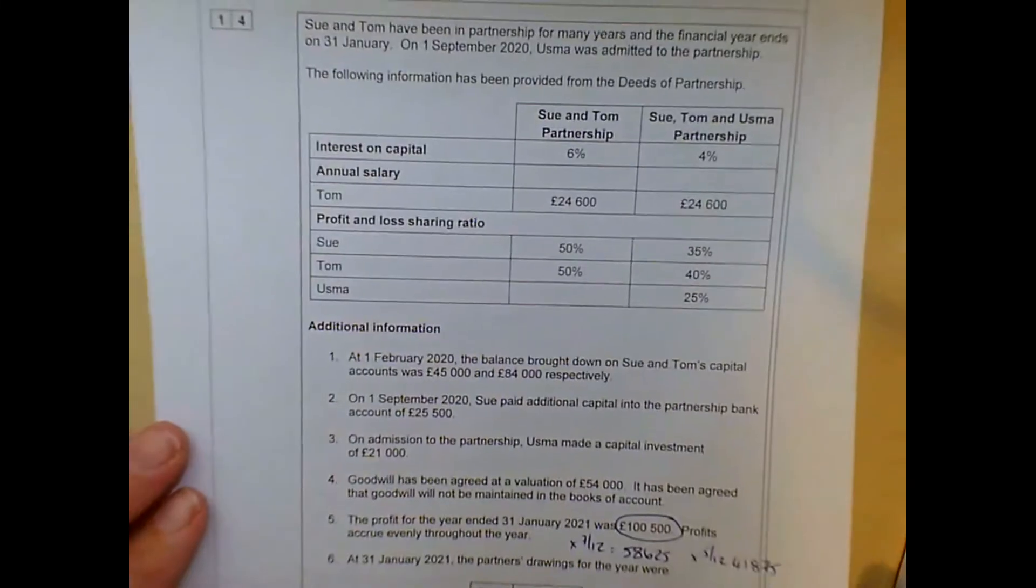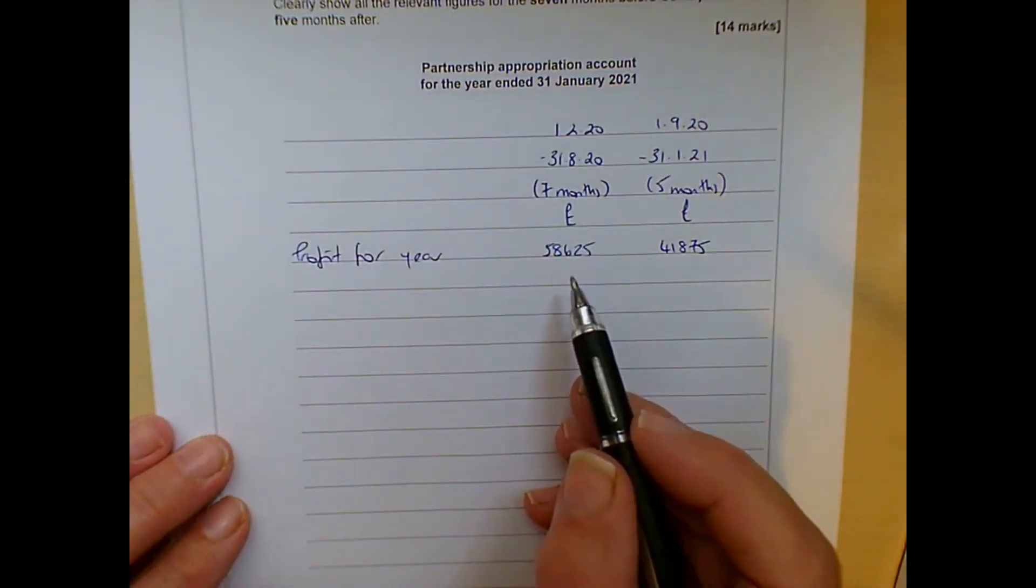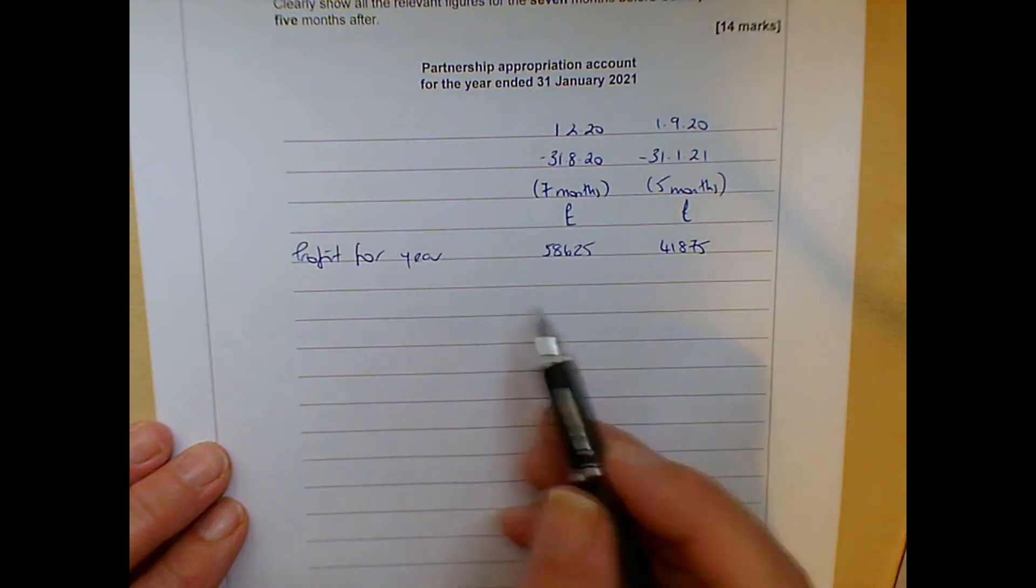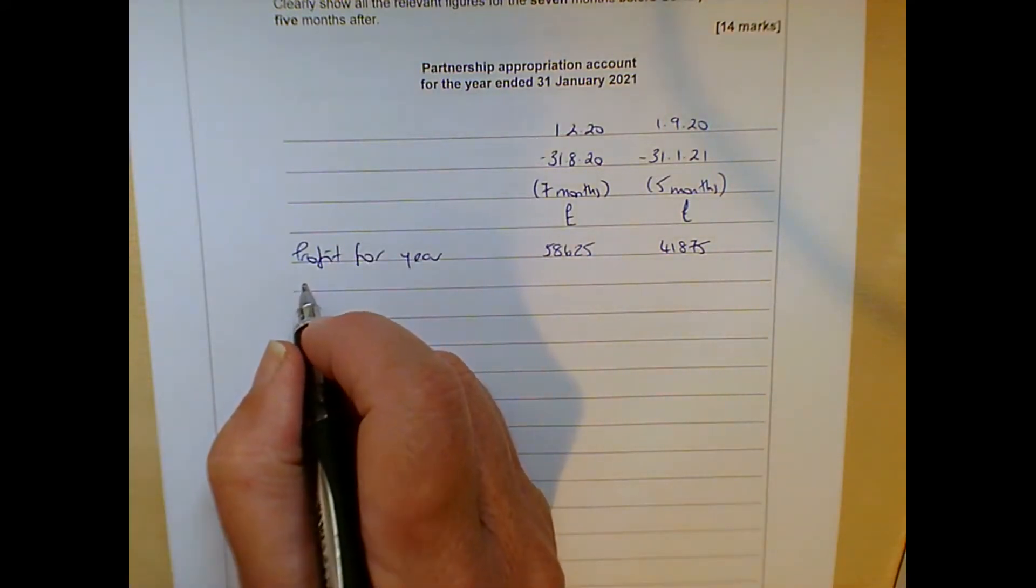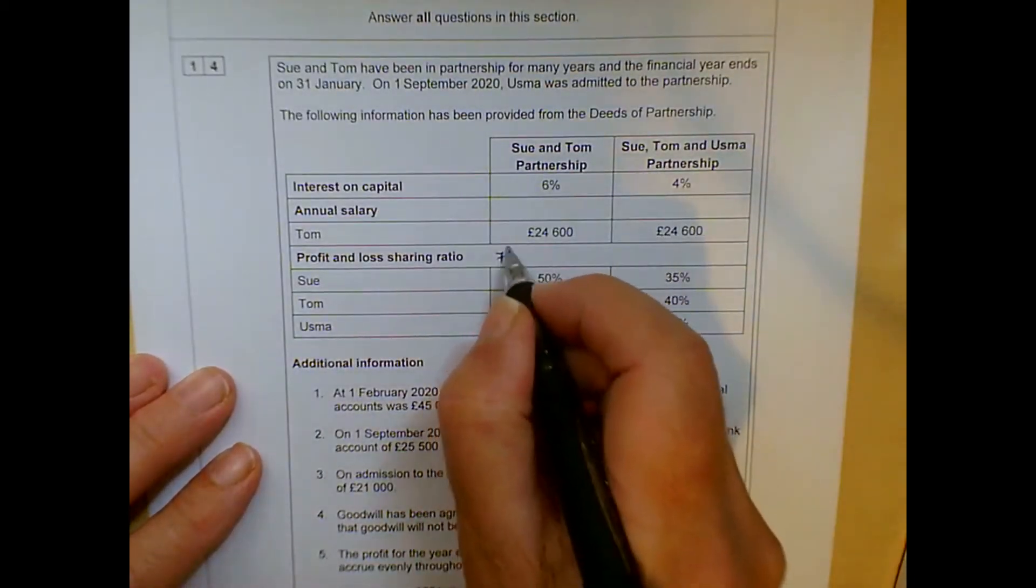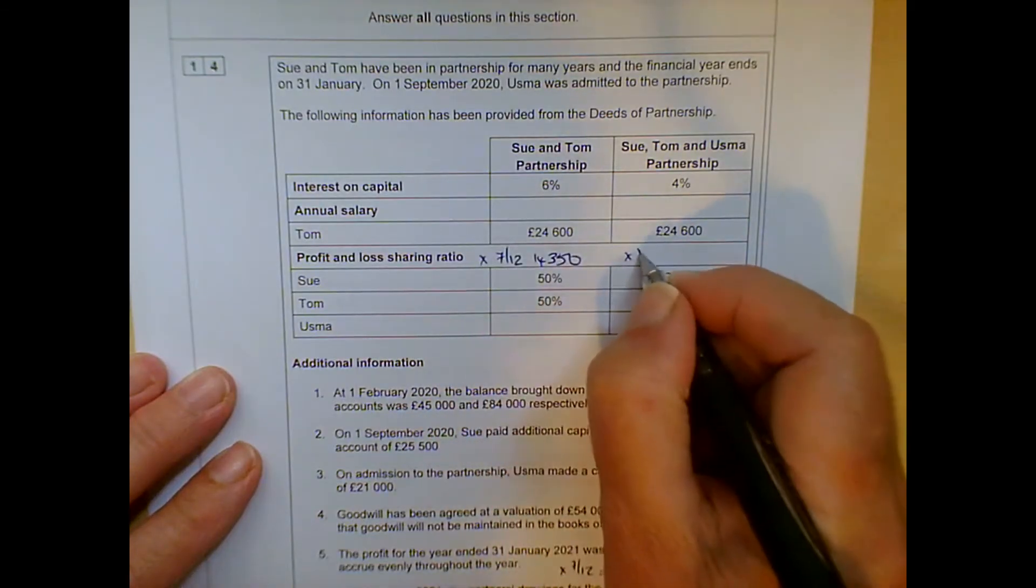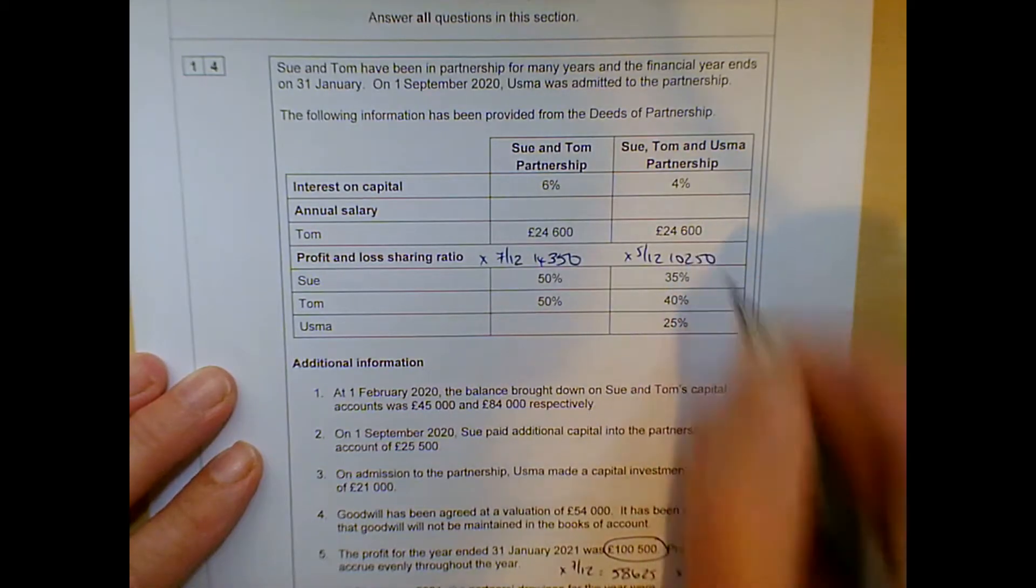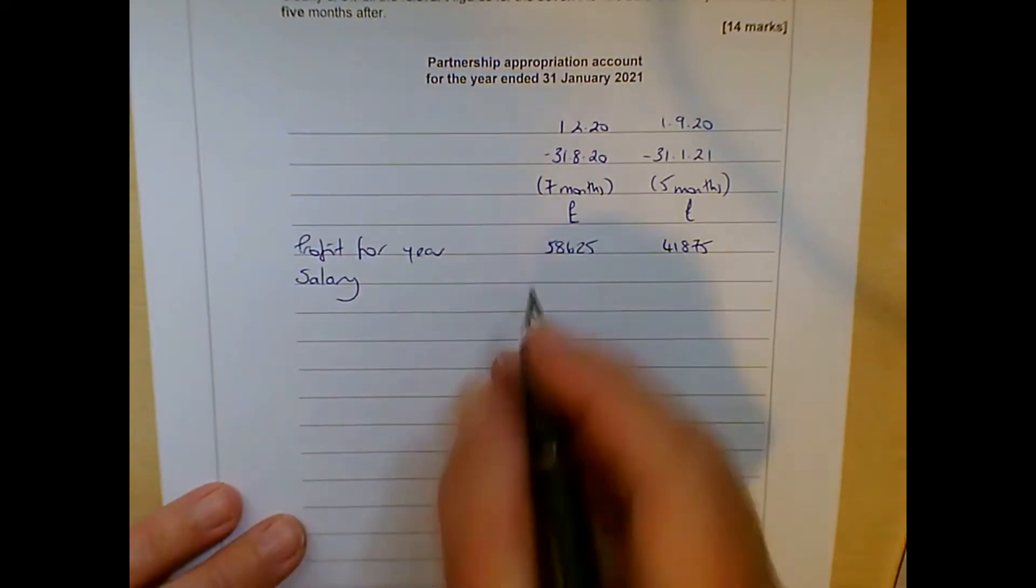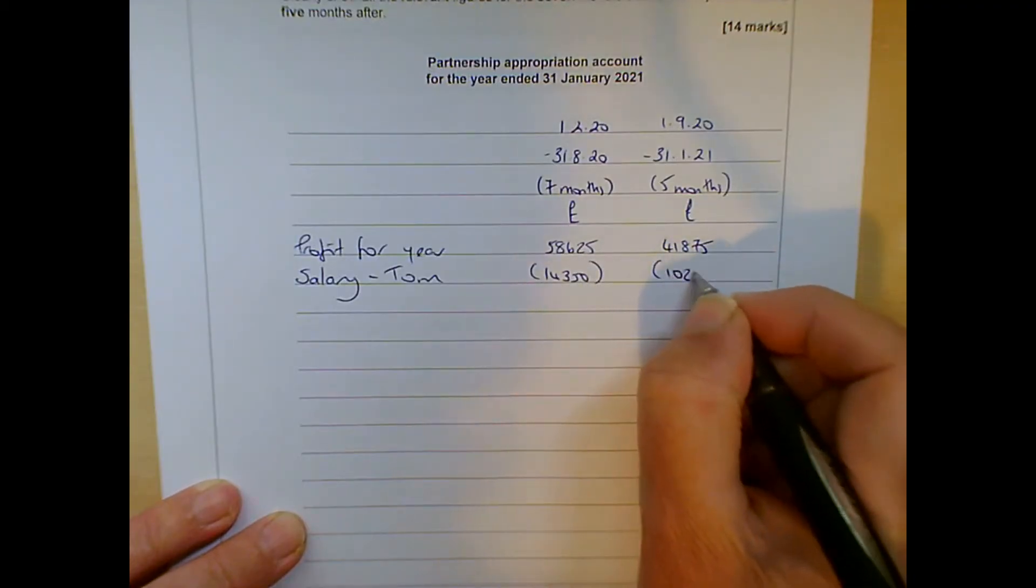Now the next thing we would need to do normally is look for any interest on drawings. There isn't any here. But remember that if you do have interest on drawings, you are charging the partner. So that actually needs to be added to the profit rather than taken away. So there's no interest on drawings. So the next thing we can sort out then is the salary. So Tom was getting a salary of £24,600. I'm doing the easy bits first. So this £24,600, remember it's for the year. So seven twelfths of that figure is going to be £14,350. So five twelfths of that £24,600 is going to be £10,250. So that's going to be a deduction. So salary is for Tom.